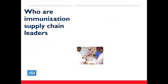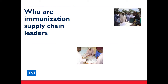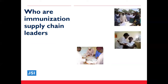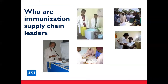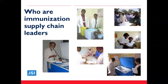To run effectively, immunization supply chains require effective, skilled, and motivated leaders at all levels. The leaders must be technically competent in various essential supply chain functions and should also be empowered to make decisions that positively impact supply chains and the availability of vaccines and other health products. Who are immunization supply chain leaders? It may be the supply chain managers directing activities at the national level, or the local EPI focal person at the district, or the nurse at a local health facility. Leaders can be found at all levels of the immunization supply chain.